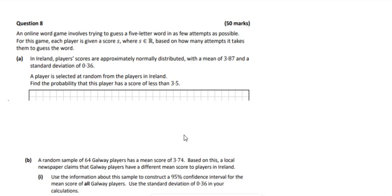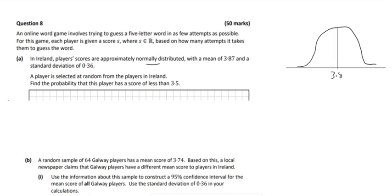This is question 8. The first part involves normal distribution — you don't have to draw the diagram if you understand it, but it's always good to show it anyway. The mean is 3.87, which means on average players took about 3.87 attempts, so most people were around three or four attempts. The standard deviation is 0.36.